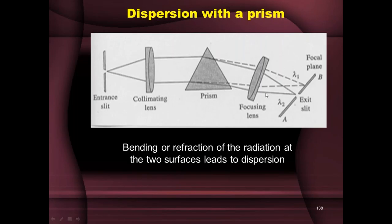Lambda 2 exits out of the monochromator through the exit slit. Lambda 1's focal point falls at some point on the focal plane but not on the exit slit, so it gets lost. Out of the two wavelengths lambda 1 and lambda 2 entering the monochromator, only lambda 2 exits and is incident on the sample. Bending or refraction of radiation at the two surfaces of a prism leads to dispersion — this is how monochromatic radiation is obtained using a prism.